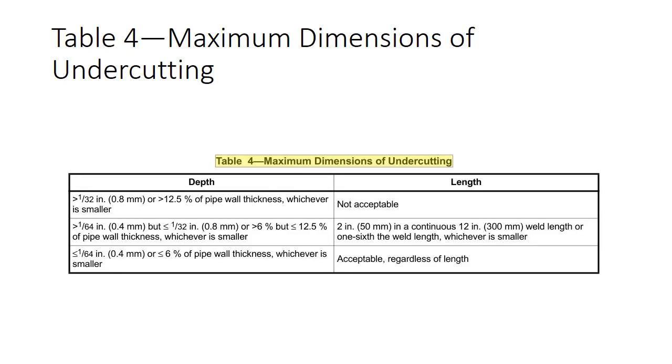Okay, so here's our Table 4, Maximum Dimensions of Undercutting. So you just need to read through it. The first one on there, anything greater than a thirty-second of an inch or twelve point five percent of pipe wall thickness, whichever is smaller. Thirty-second of an inch to me is if I can hang my fingernail on it. If it's enough that I can catch my fingernail on it, that's a thirty-second of an inch. And then it goes on from there and gives you a couple other depths that you need to address. One sixty-fourth of an inch or six percent of the pipe wall thickness, whichever is smaller. But it gives you acceptable regardless of length. So you just need to read through this table and understand that this deals with undercutting.